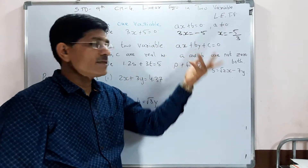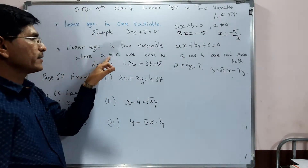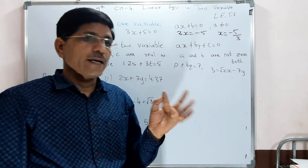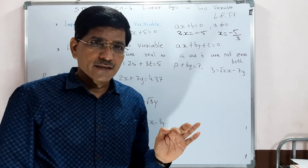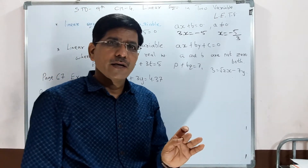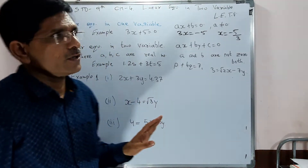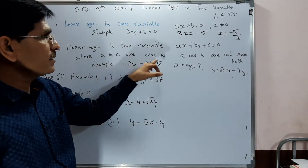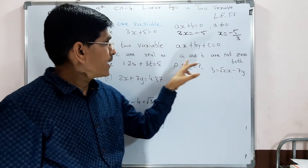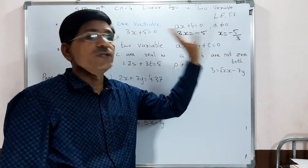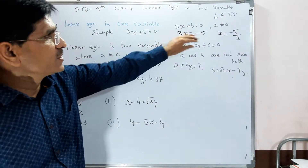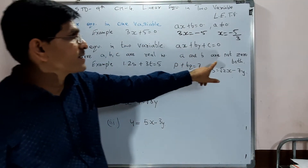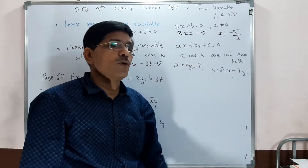Here a, b, and c are real numbers. We know from chapter number 1 that real numbers include natural numbers, whole numbers, integers, rational numbers, and irrational numbers — everything is included. So we can take any number. Now, an important point: a and b are not both 0 at the same time. If both a and b are 0, the equation cannot stand. So that is a necessary condition: a and b cannot both be 0 at once.